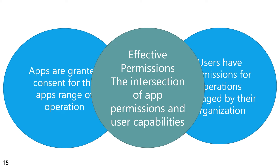The API will take the intersection of those two and decide how the application will actually work. We refer to this as effective permissions. Just because we might give an application user.readwrite.all — which is a very powerful permission — in the hands of a regular user it doesn't allow that user to update someone else's profile. In the hands of a tenant admin or a user admin, yes, that application is trusted. So just because the application has been granted permission doesn't mean the user can do that, and just because the user has the ability to do an operation doesn't mean the application can if it hasn't been given a matching scope in the consent process. Your application is always bound, with a delegated permission, to what the user can do — these are the effective permissions.